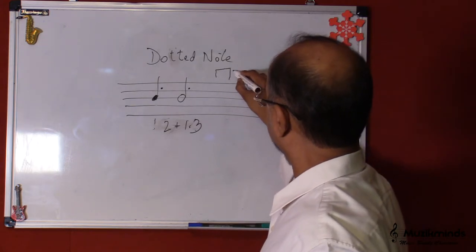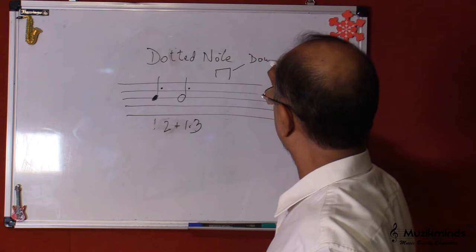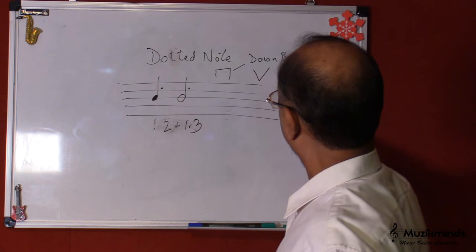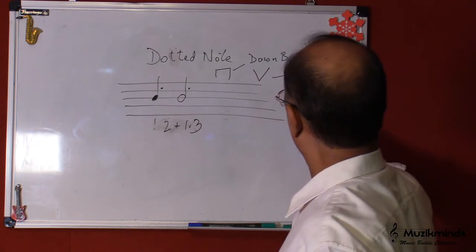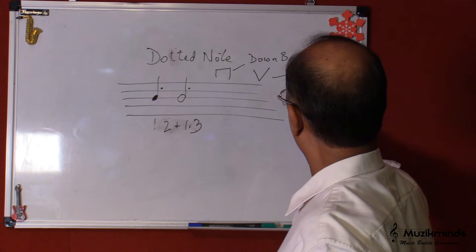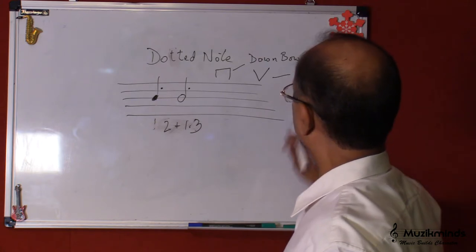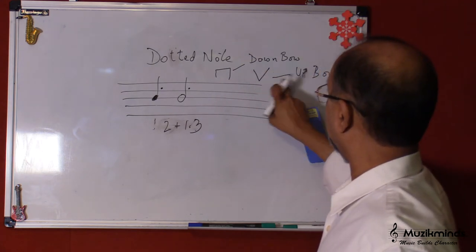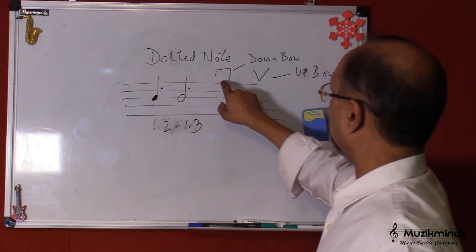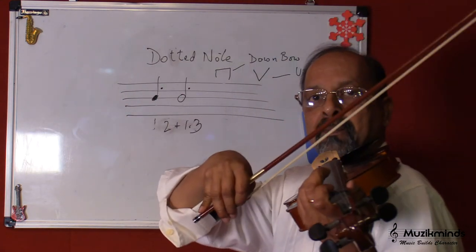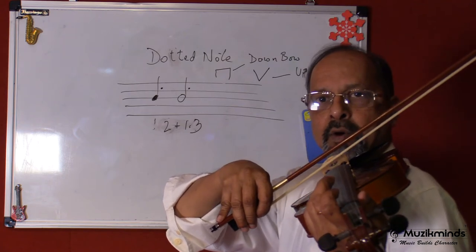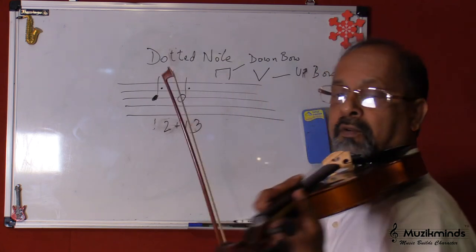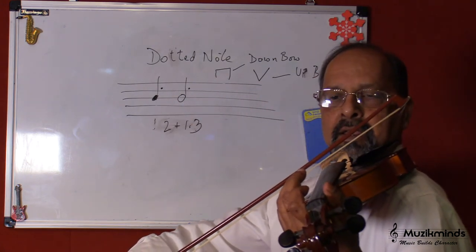Now this symbol means it's a down bow. And this symbol here means it's an up bow. Now this symbol here means it's a down bow. This is an up bow. So how this would be played on the violin. Now if I've got to play a down bow, I would need to keep my bow somewhere here and come down. If this is an up bow, I keep my bow here and I go up.